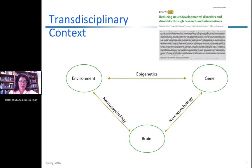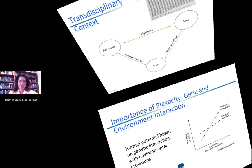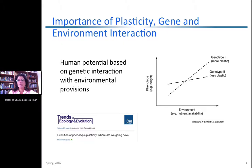Starting from the transdisciplinary perspective, we have to keep in mind the environment one lives in and the genetic makeup — your nature and nurture — and how this manifests in the way your brain is structured. We keep in mind epigenetics and the interplay between your genes and the environment throughout the discussion. You're born with a certain genetic makeup inherited from your parents, and based on your genes, you react to your environment in distinct ways. Human potential is based on your genetic interactions with the environment.